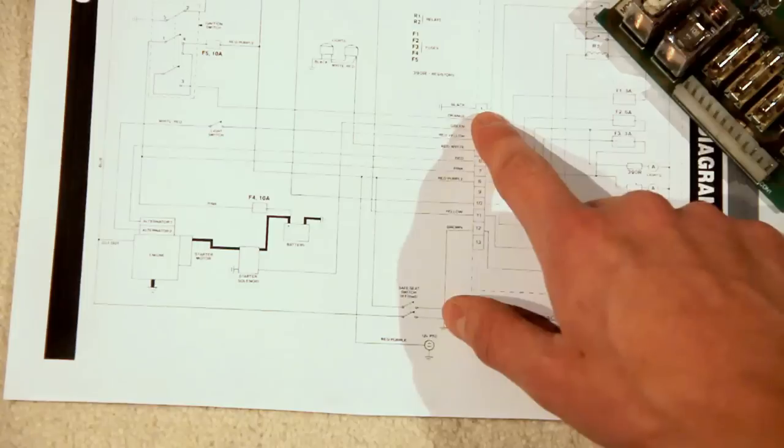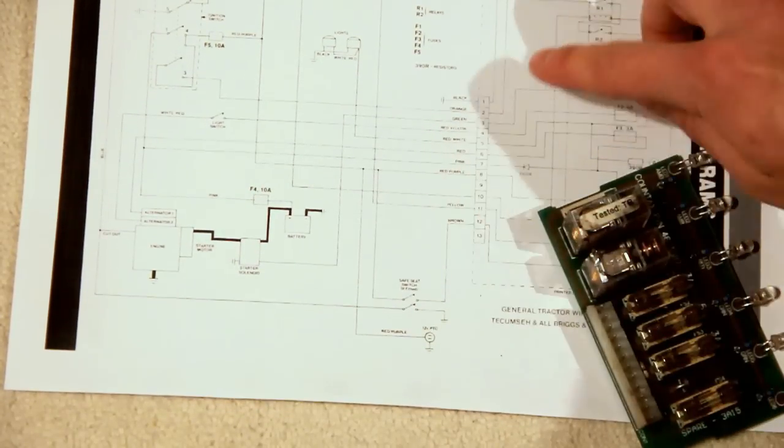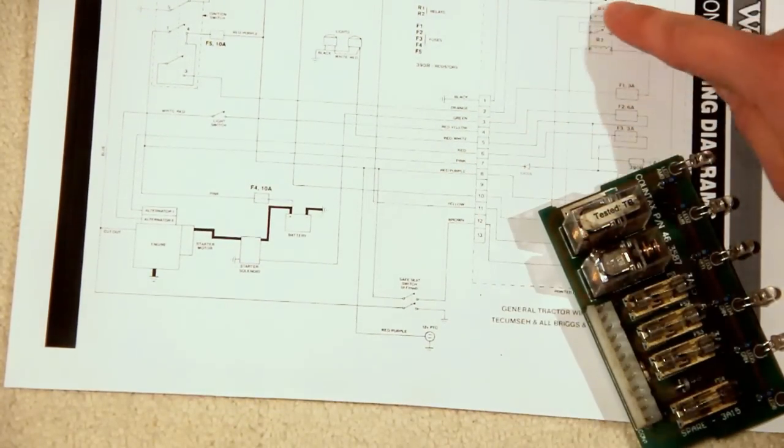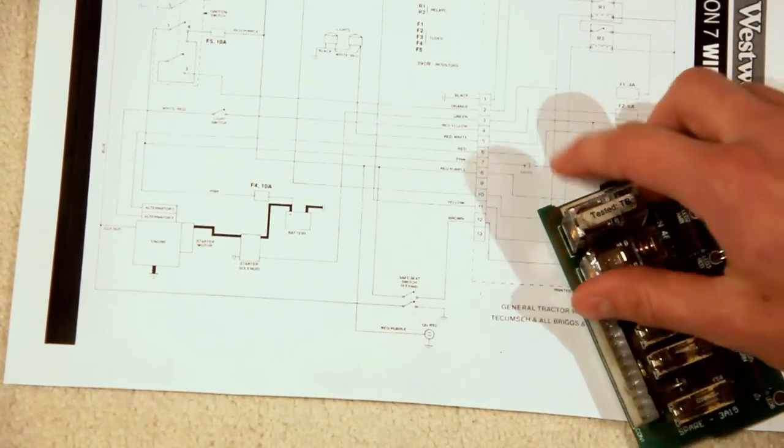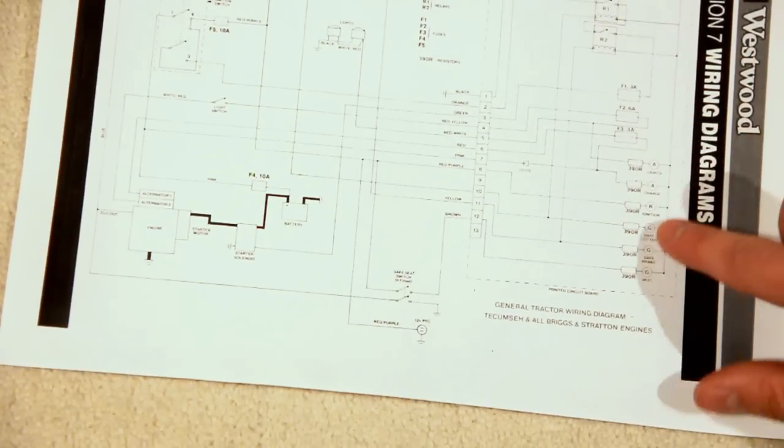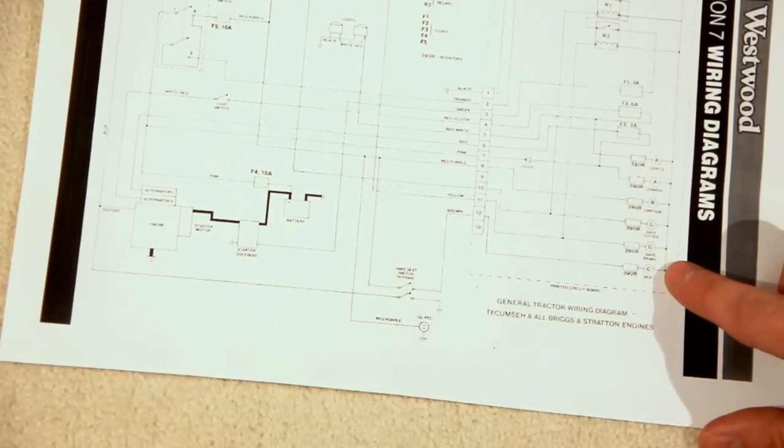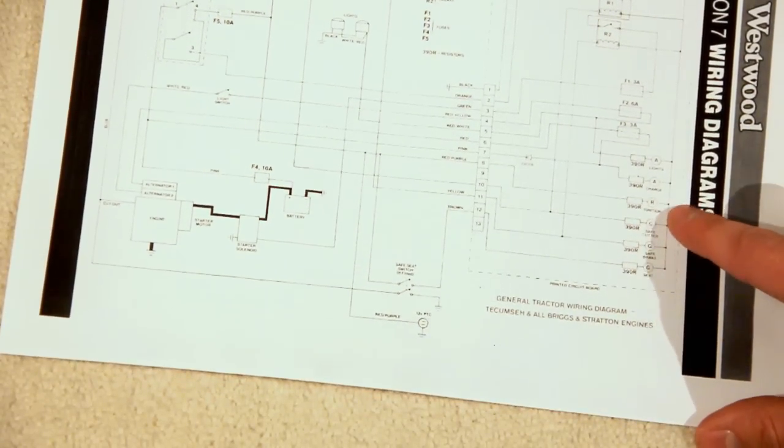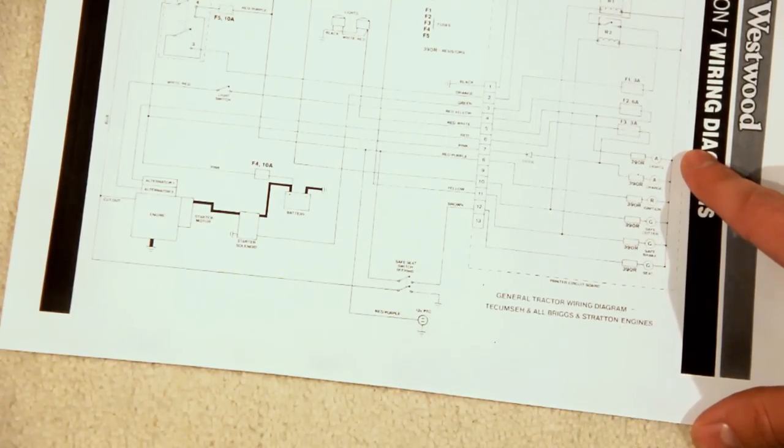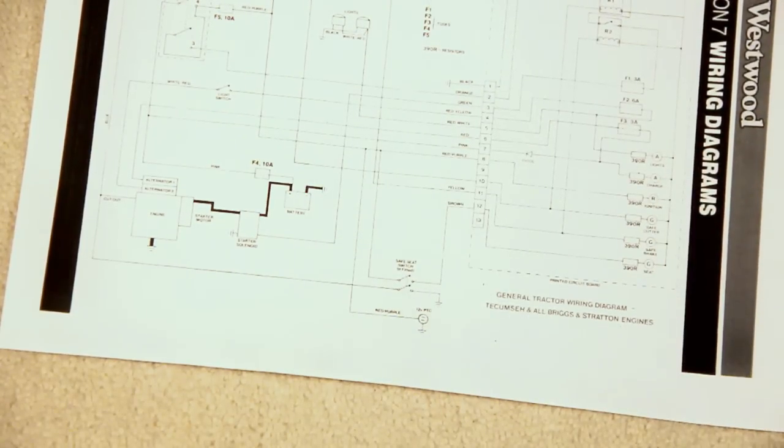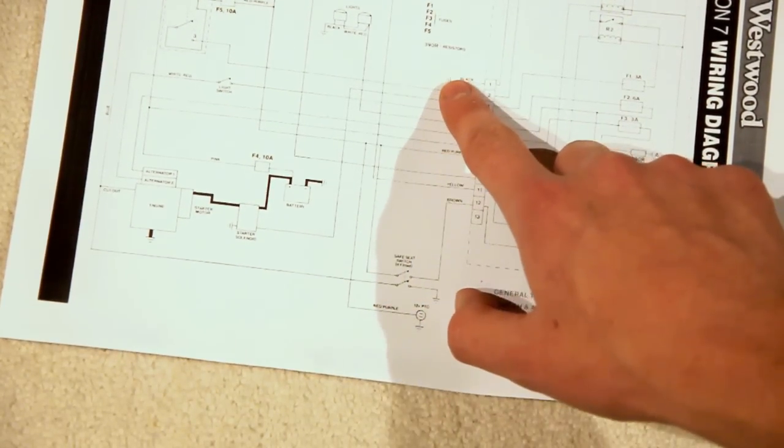Now if we follow that through the actual circuit board itself, it goes up here, over the top, down the side, and it comes over the top here, and it's actually providing the earth for all of these LEDs which are being displayed on the dashboard as well. So number 1 really is the earth.